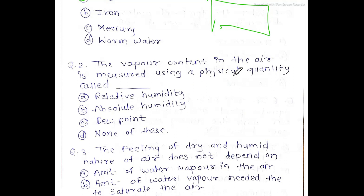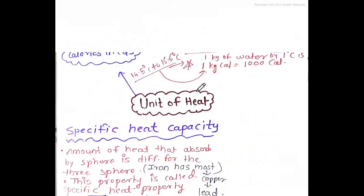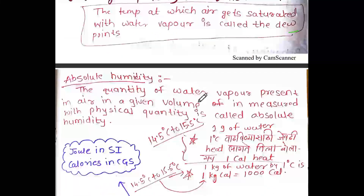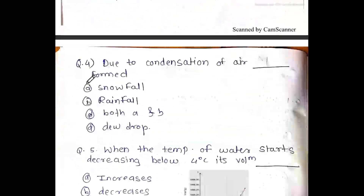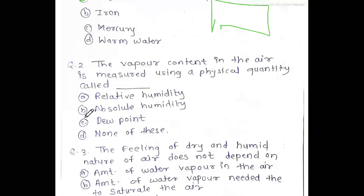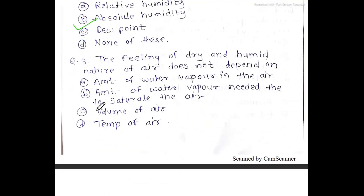Next MCQ: the vapor content in the air is measured using which physical quantity? Reading the definition: the quantity of water vapor present in the air measured per unit volume is known as absolute humidity. The answer is option B — absolute humidity.